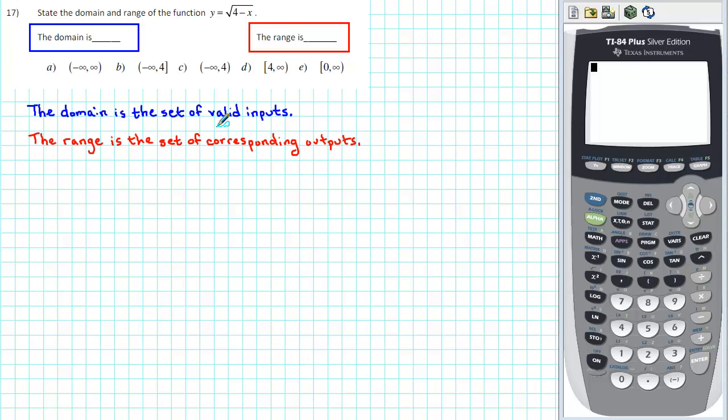To get a better feeling for what that means, let's make a small table of values. Let's check and see whether negative 5, 0, and 5 are valid inputs. We'll start with negative 5. Substitute negative 5 for x, and we get 4 minus negative 5 is 9. The square root of 9 is 3. Negative 5 is a valid input because it produces an output of 3. Negative 5 is in the domain, 3 is in the range.